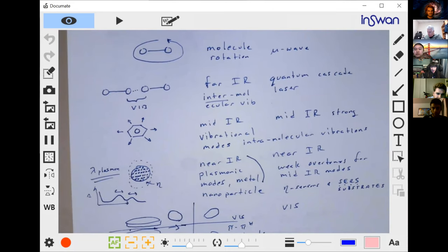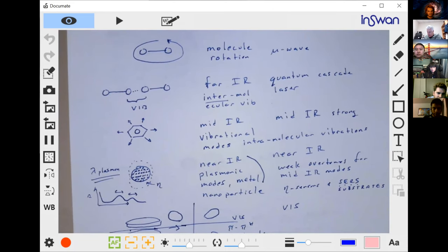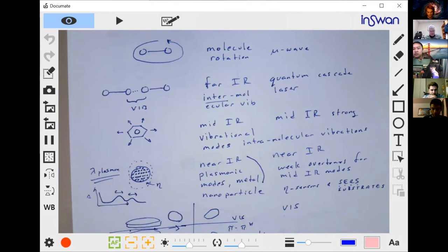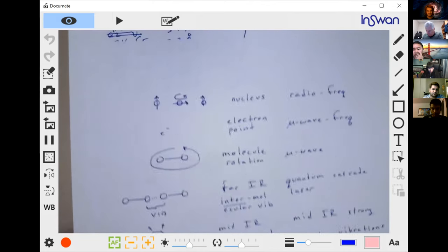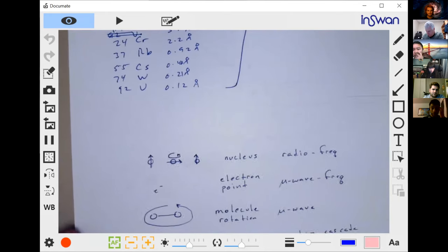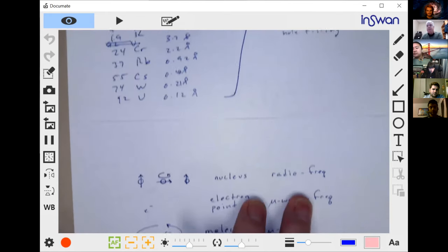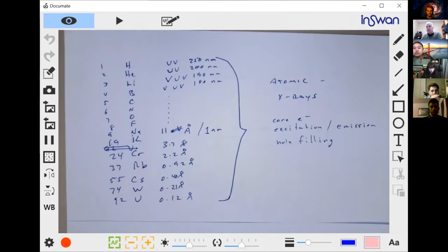Then you go to the ultraviolet and you got sigma, sigma star, and N sigma star, stuff like that. It's just like no nodes, one node, that type of thing.